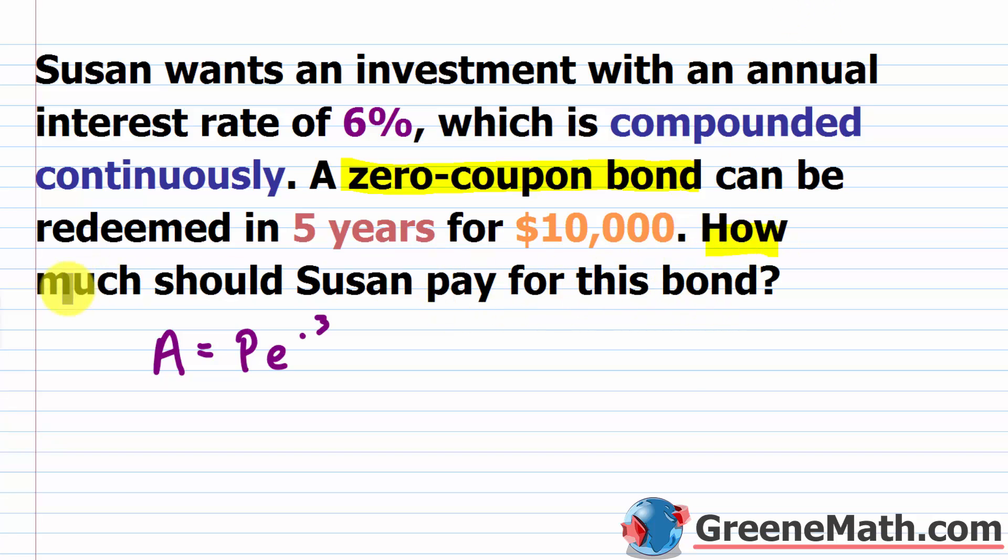How much should Susan pay for the bond? We don't know. But we have the amount she's going to get at the end. At the end of this, in the five years, she's going to get $10,000. So I'm just going to erase this and put my 10,000 here, put my comma in. And basically I just want to solve for P.